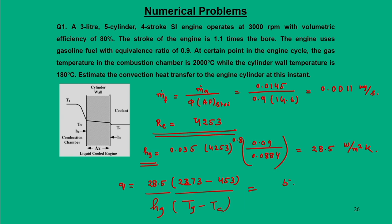The convective heat transfer is therefore: q = h_g·(T_g − T_w) = 28.5 × (2273 − 453) = 51.87 kW/m². This is a simple example of heat transfer analysis in IC engines, mainly at the combustion chamber. With this, I conclude the discussion for today. Thank you for your attention.